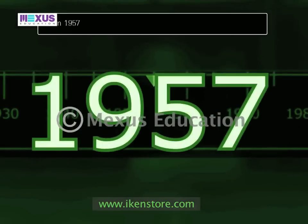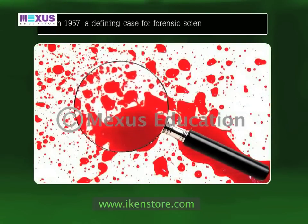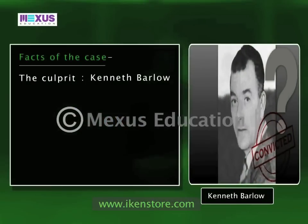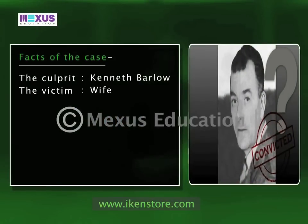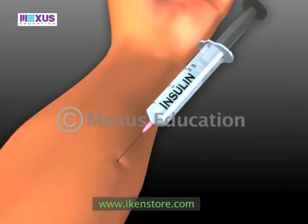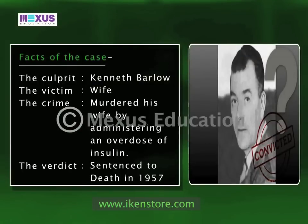In 1957, a defining case for forensic science was solved. Kenneth Balo roused his neighbours with the news that his wife had been found unconscious in the bath. Through in-depth observations of the body, it was determined that an overdose of insulin had been administered, leading to a trial. Kenneth Balo was subsequently tried for the murder of his wife.